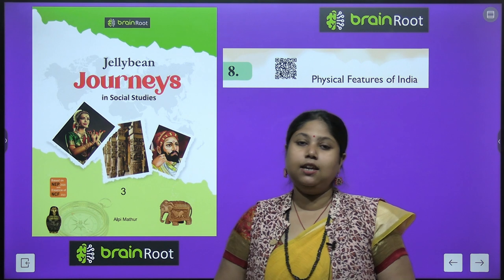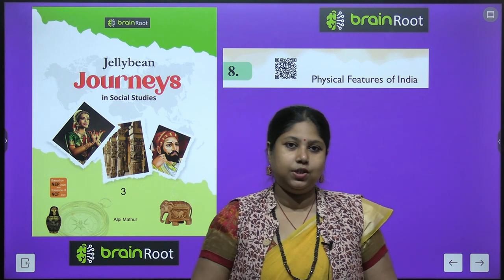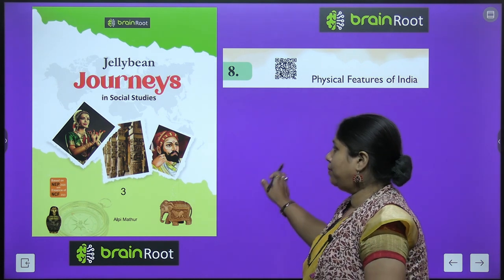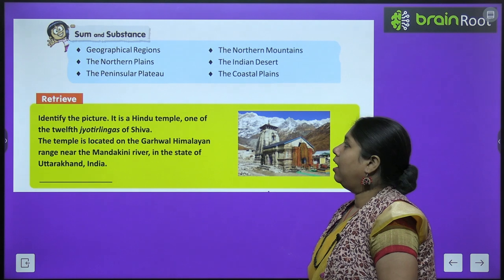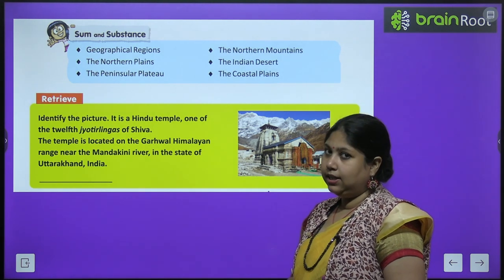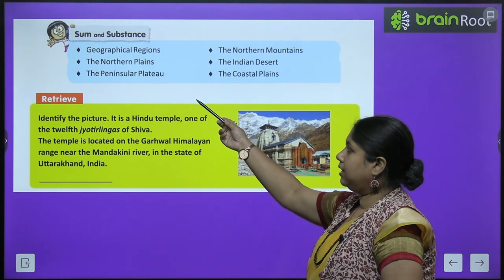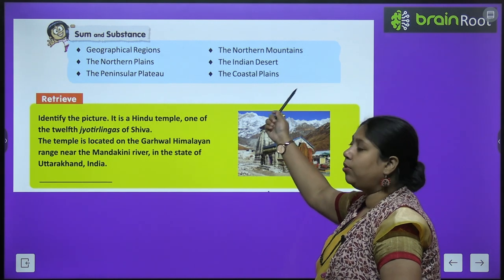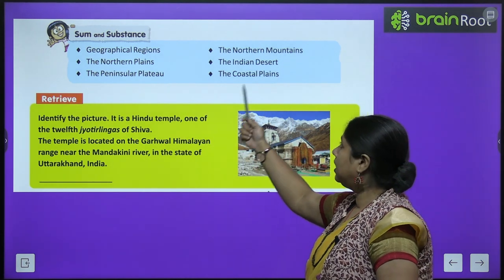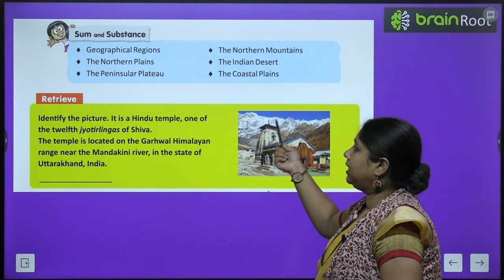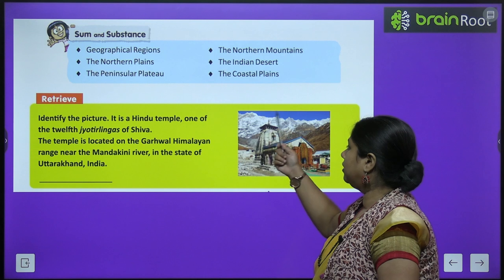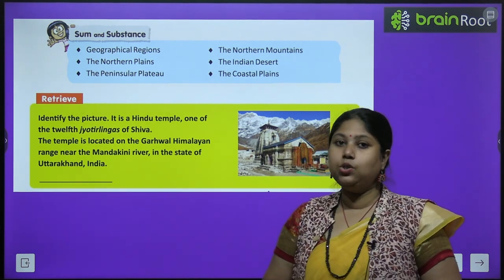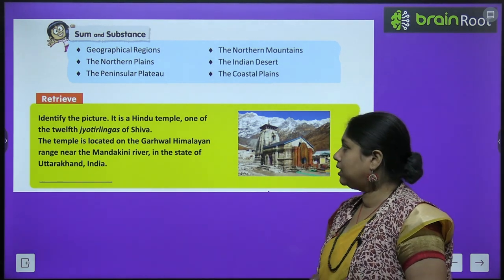Today we are going to study about India's physical features. In this chapter, we are going to study about the geographical regions: the northern mountains, the northern plains, the Indian desert, the peninsular plateau and coastal plains. But before we begin the chapter, here is a small activity — you have to identify this picture.